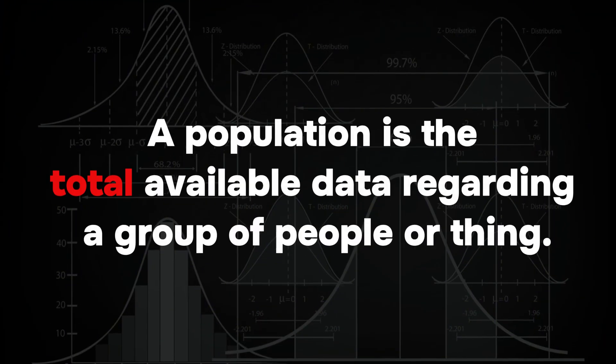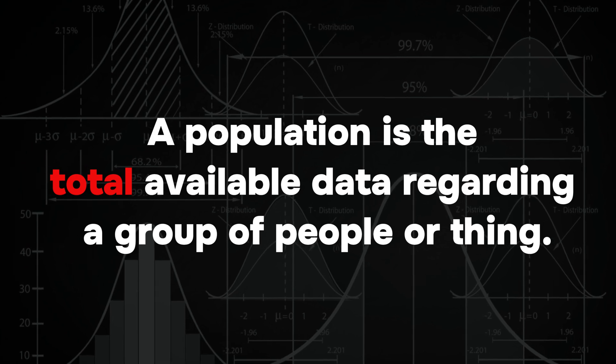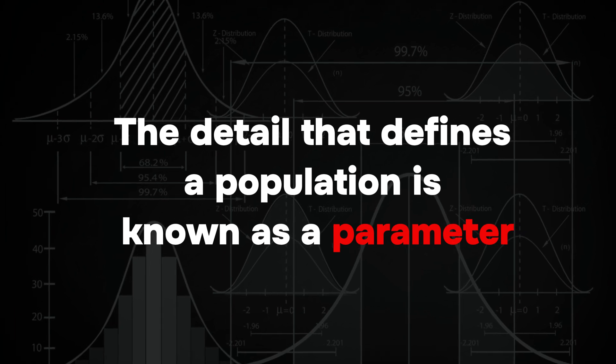Let's try to understand the concept of population and sample. In a more generalized manner, a population is the total available data regarding a group of things or a group of people. Some of the properties that define the population include the fact that a population is actually very large — it's hard to analyze, it takes a lot of time to work on. So that is why it's called the population; it's really, really big.